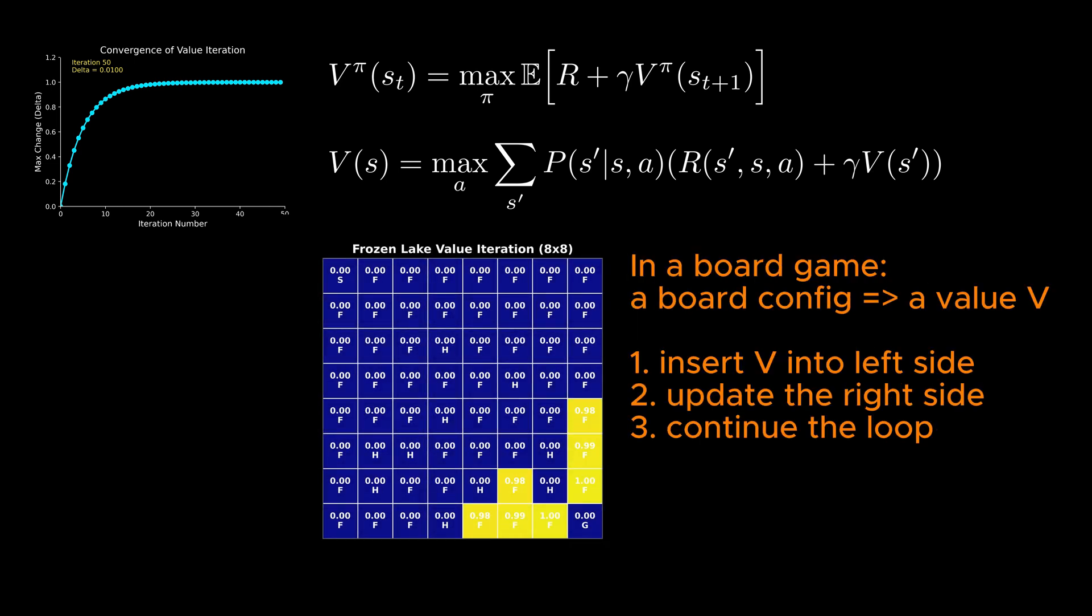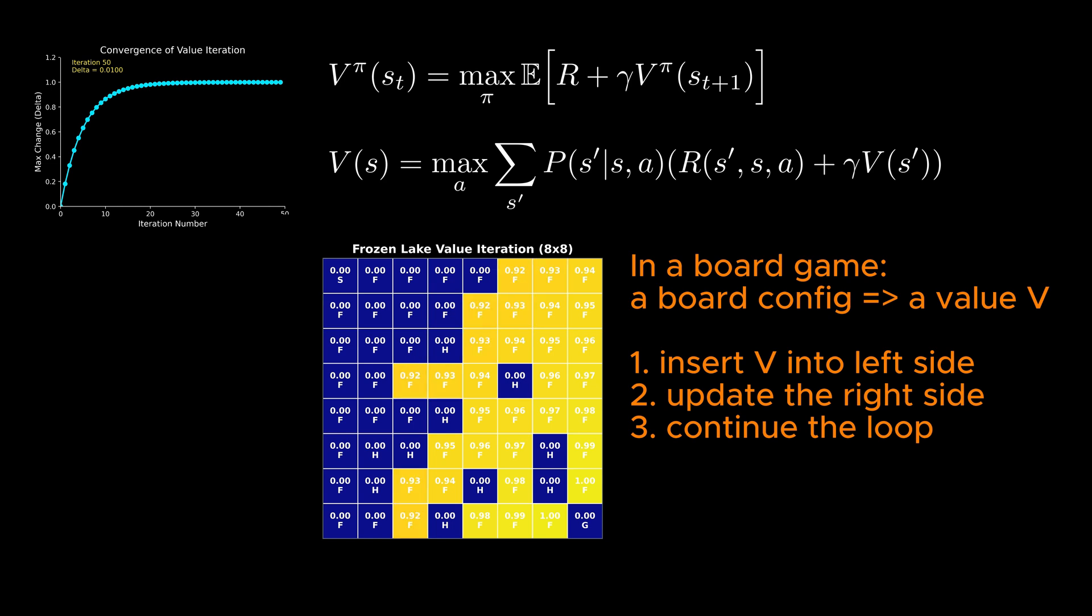Assuming that the rules of the system are known, everything on the right-hand side has a value to start with. Next, for each state S, we calculate the new value using the Bellman equation. This involves summing over future states S' for a given action A, and for each compute the right-hand side of the equation.